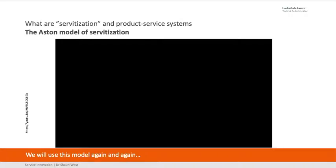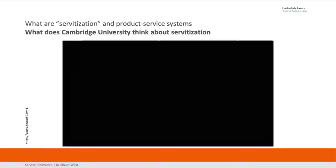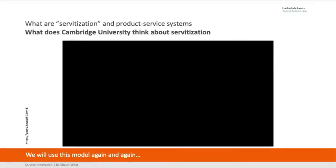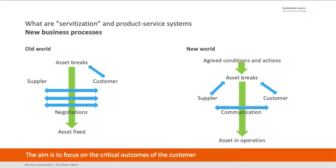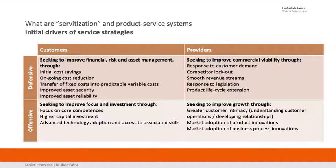Watch the video from Aston on servitization — we use this model time and time again. Watch Andy Neely talking about servitization. In the old world, basically the asset broke, we discussed it and then we fixed it. Today, with Power by the Hour, the asset breaks and I just have to get it back into operation as quickly as I can. Power by the Hour means I take responsibility for the breakdown — I've agreed what happens when it's broken and we get on with operating the machine. This means I may lose some income I would have got from charging a lot for repairs. So let's try not to break it, because we actually make more money by making it run. It's a completely different model to the old world.